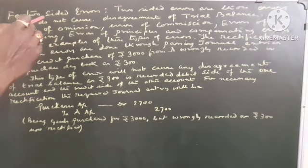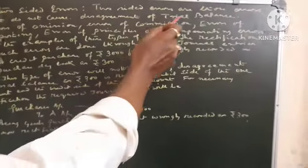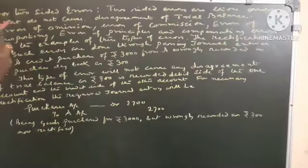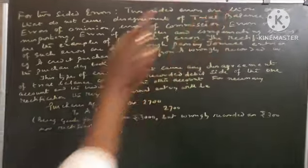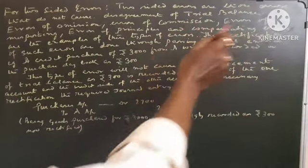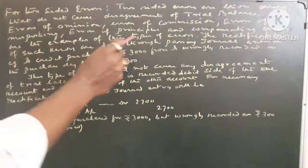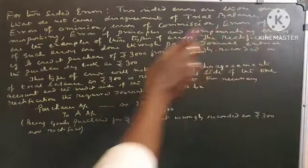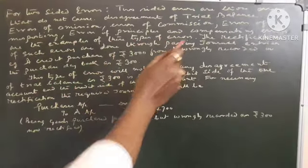For two-sided errors. Two-sided errors are those errors that do not cause disagreement of trial balance. Errors of omission, errors of commission, errors of misposting, errors of principles and compensating errors are the example of these type of errors.